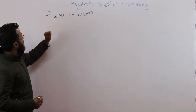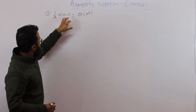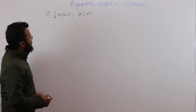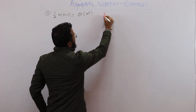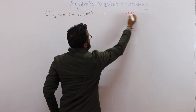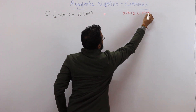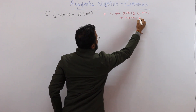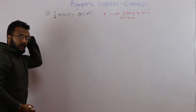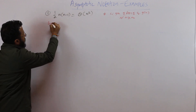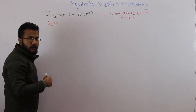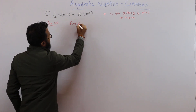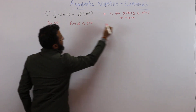The first example is: we have to prove that half n times (n-1) is theta of n squared. The definition of theta says fn should be less than or equal to c2 into g(n) and greater than or equal to c1 into g(n). First of all, let us prove for big O, because theta corresponds to both big O as well as omega. Big O represents that fn is less than or equal to c2 into g(n).